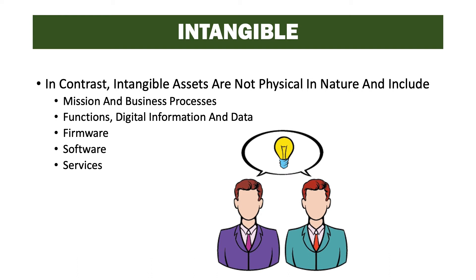An easy way to think of this is tangible items are things you can put your hand on — they're physical items you can touch and feel. Intangible items are usually things that are not physical; they include things you can't touch, like information, processes and procedures, or reputation.